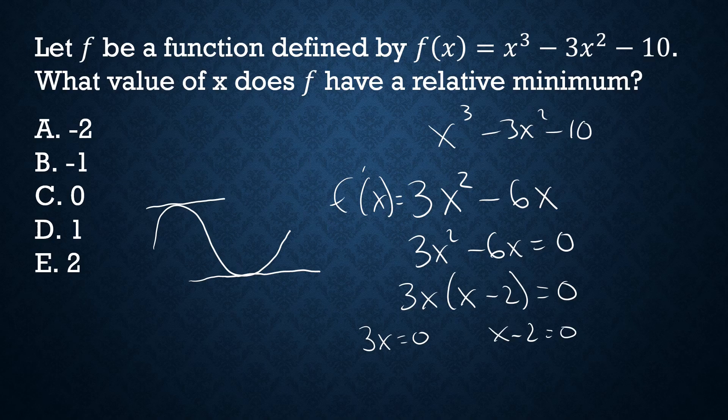3x equals 0, divide both sides by 3, so x equals 0. Add 2 to both sides here, x equals 2. So either x equals 0 or x equals 2 will be the relative minimum.